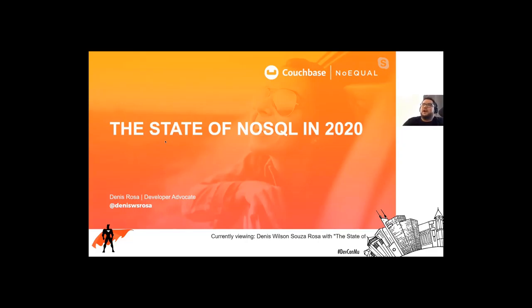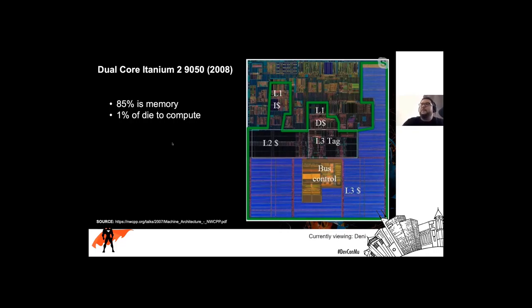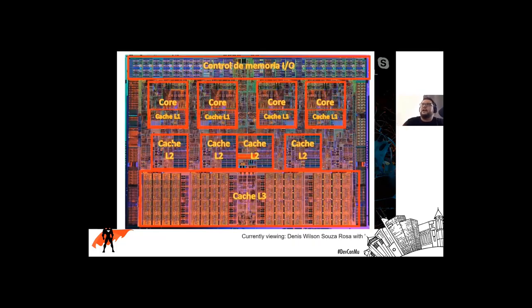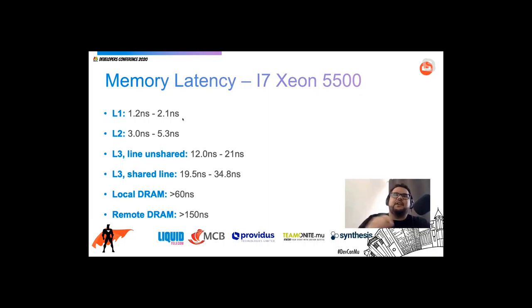When I think about the architecture of modern CPUs, it's kind of mind-blowing to realize that roughly 85% of the CPU is actually memory, and only 1% is dedicated to actual computation. This is a fairly old, 12-year-old CPU, and you can see that everything inside the green lines is memory. Even in more modern architectures — a quad-core array — it's pretty much the same. The majority of the CPU is memory. This is because of one problem called latency. Latency is a big issue in computer science. The farther you get from the CPU, the latency increases dramatically.